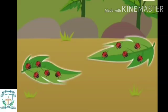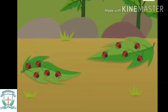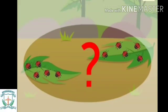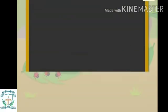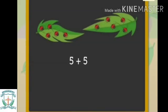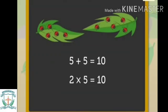Let's look at one more example. There are two leaves. There are five ladybugs on each leaf. How many ladybugs are there in all? By adding, we get five plus five equals ten. By multiplying, we get two times five equals ten. Hence, there are ten ladybugs in all.